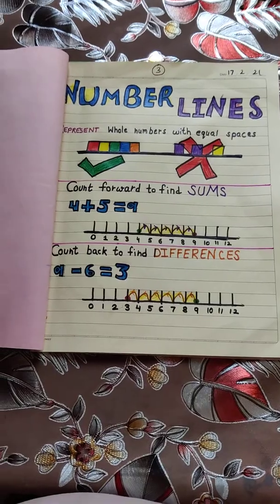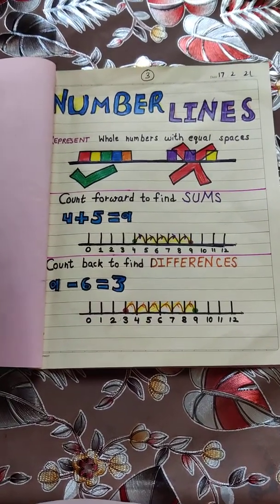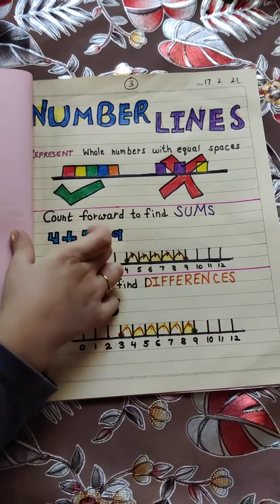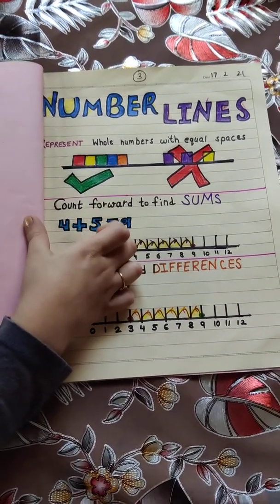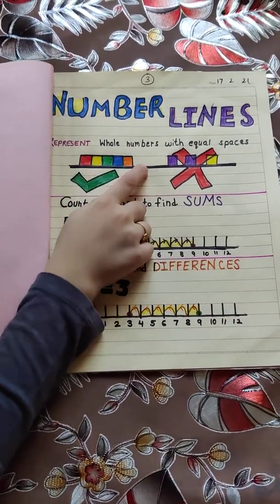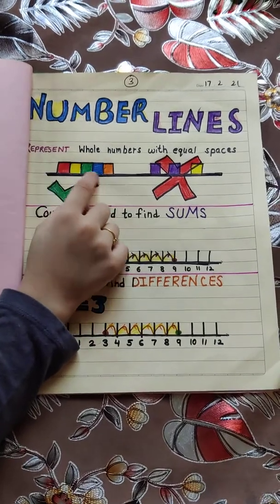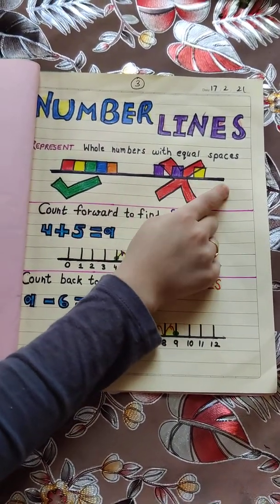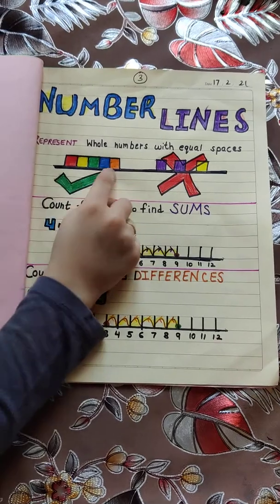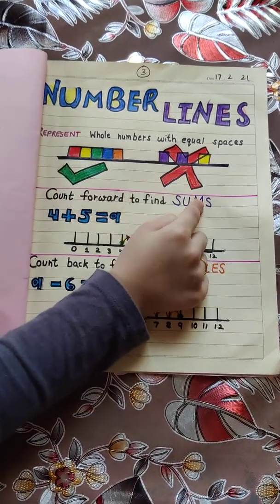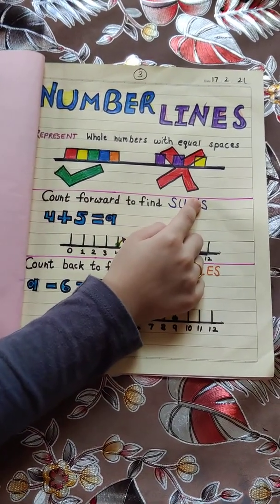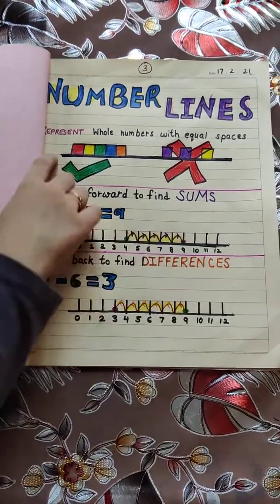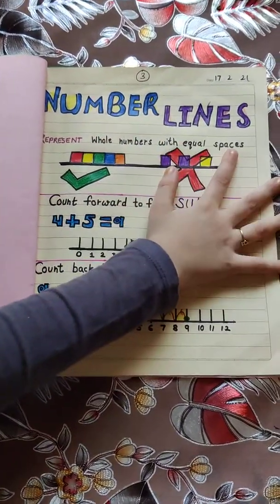My next topic is number lines. Number lines represent whole numbers with equal spaces. Here you can see in the boxes there are equal spaces, but here there are not equal spaces in the boxes. So this is the correct and this is the incorrect.